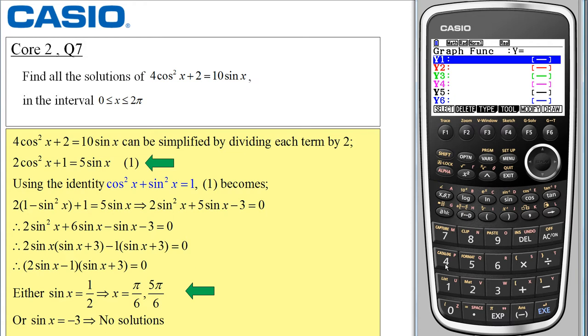The first one is 4 cos squared x plus 2 so that's 4 and if I open a bracket I can select cos x close the bracket and square it so that of course means 4 cos squared x plus 2 and select execute and the next function is 10 sin x.